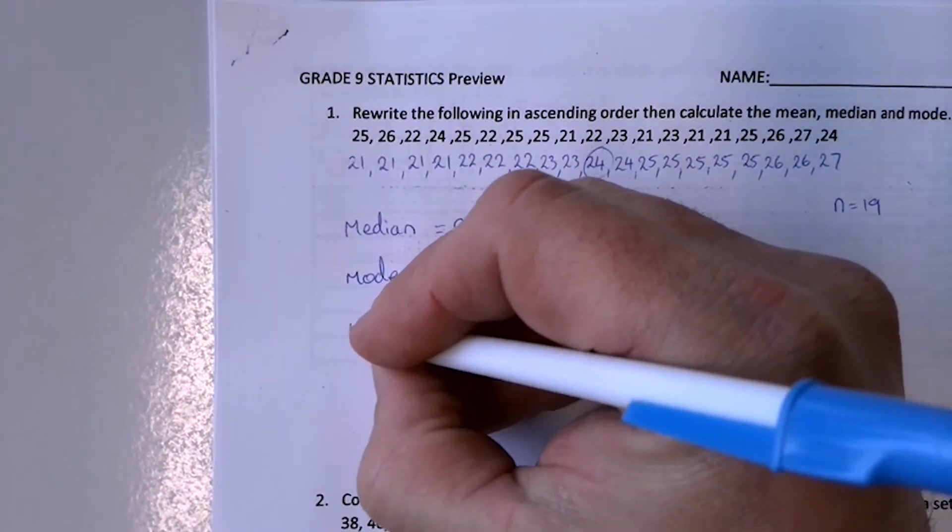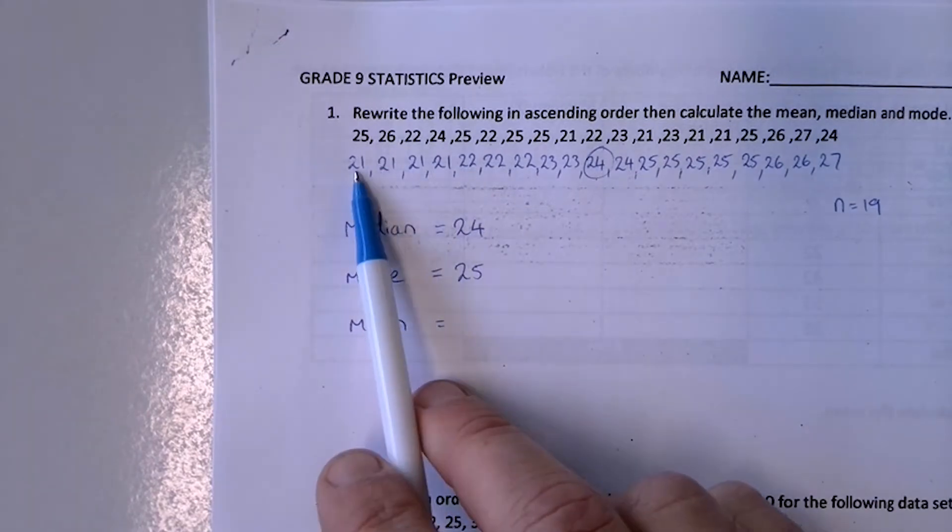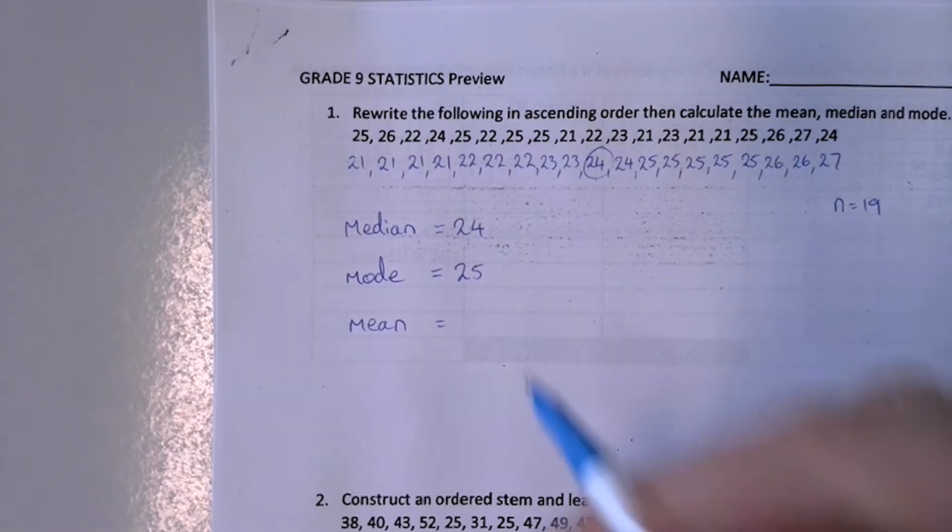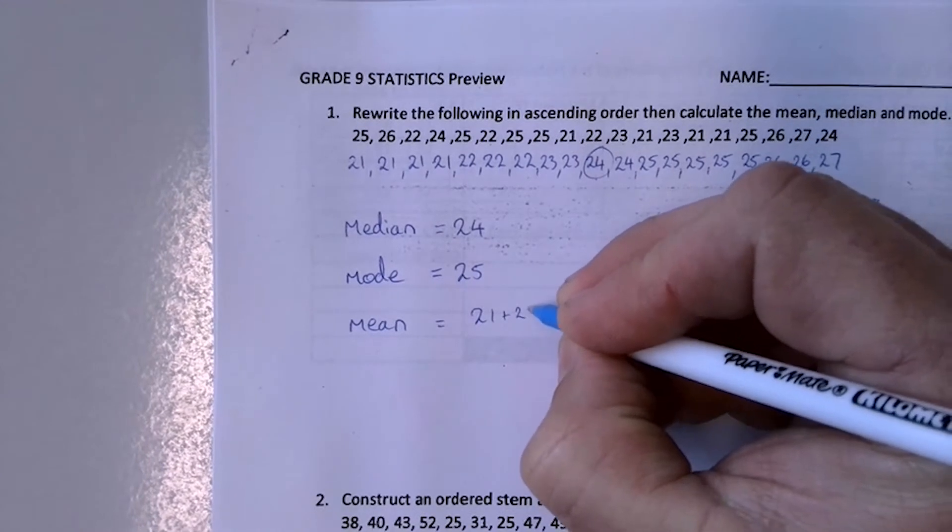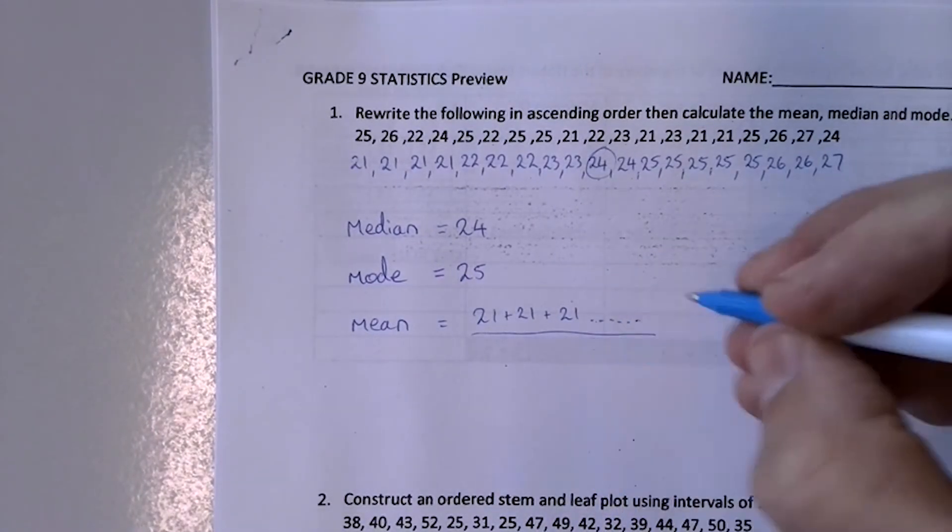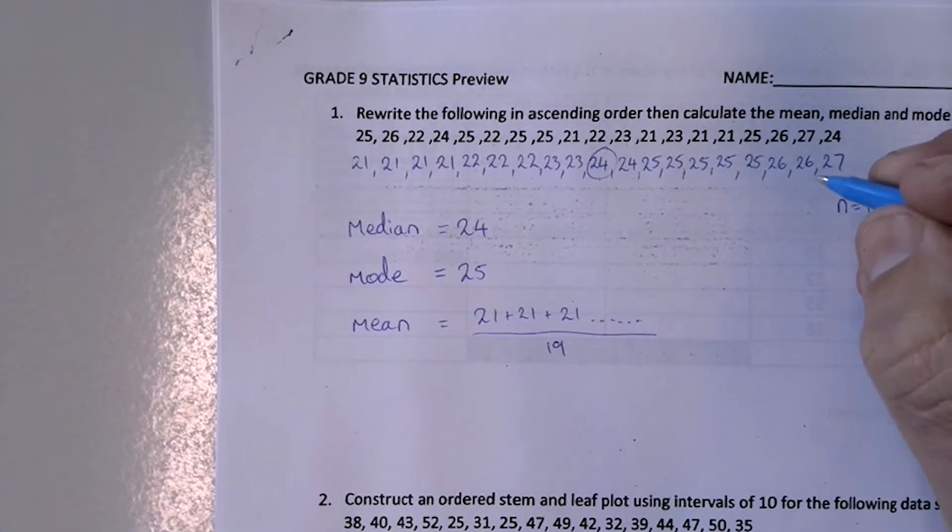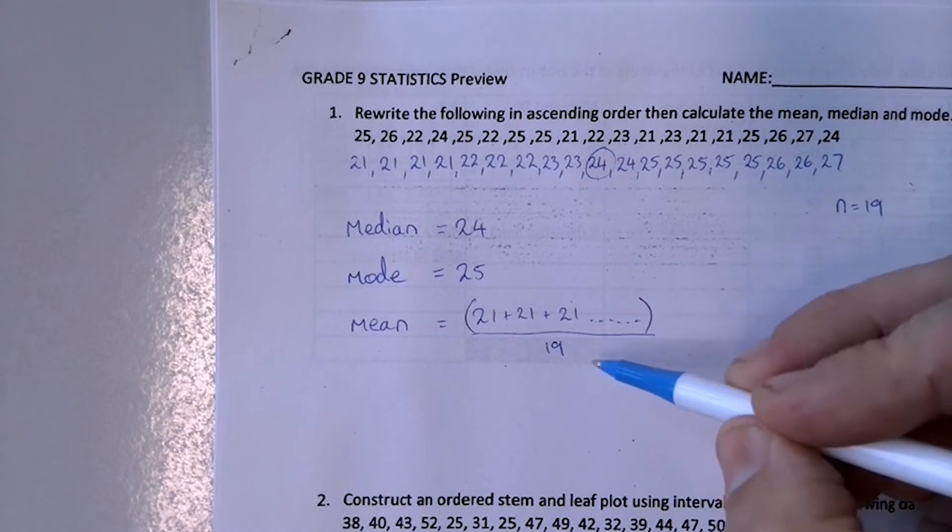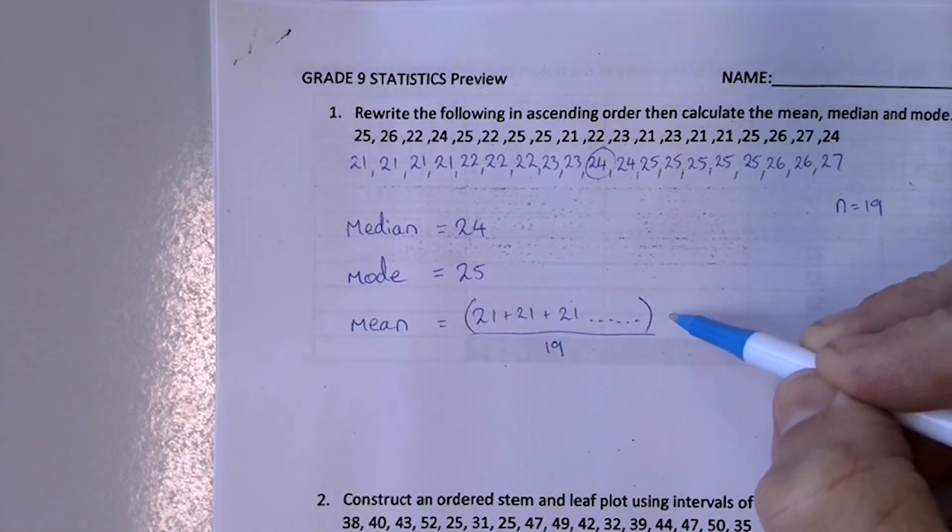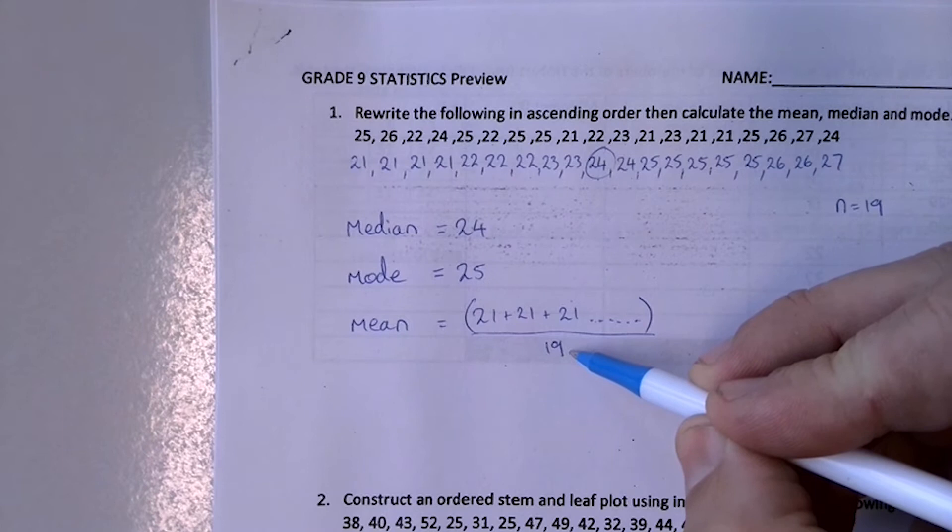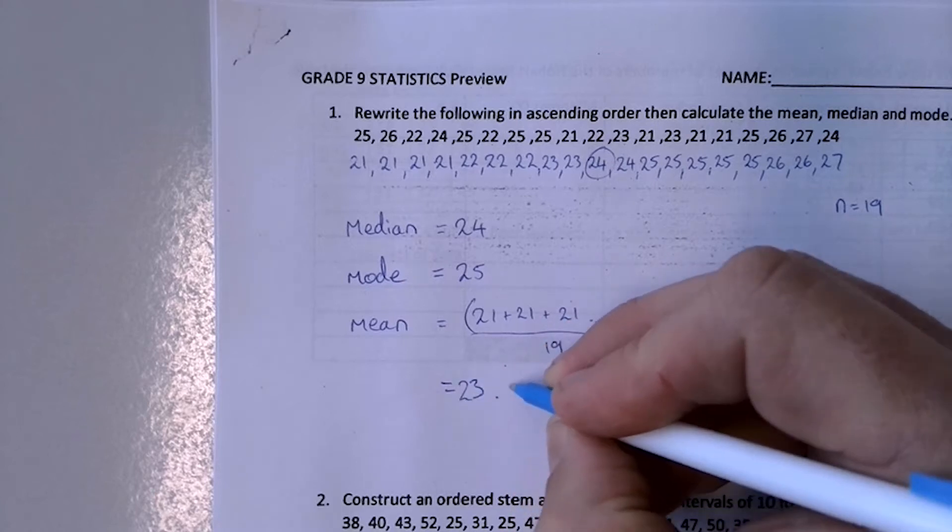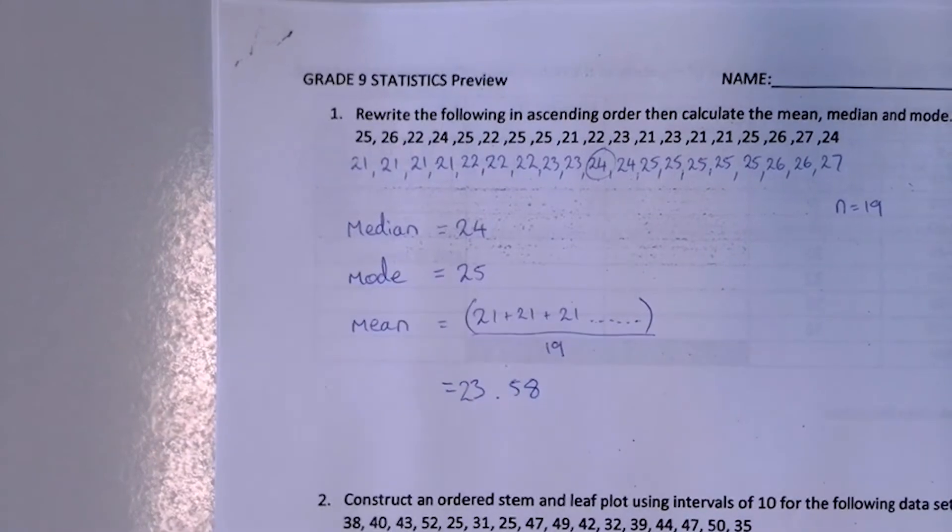And then the mean, what you will have to do is you will have to add all these numbers together in a calculator and then divide by the total number of scores. So it will be 21 plus 21 plus 21, et cetera, et cetera, et cetera. And once you've added all of those up, you'll then need to divide by 19. Now it's really important if you're using a calculator that you put this in brackets. Because the calculator will do division before addition. So if you don't put the brackets in, it will just divide your final score by 19. You might not get the correct answer. So once you've done all of that, you should arrive at the answer 23.58. And that's done.